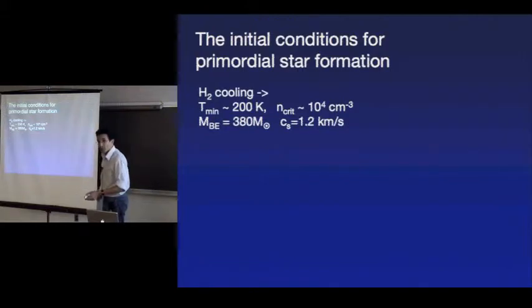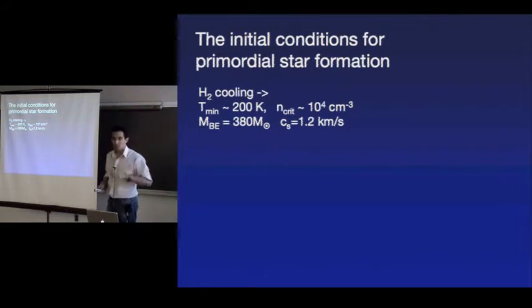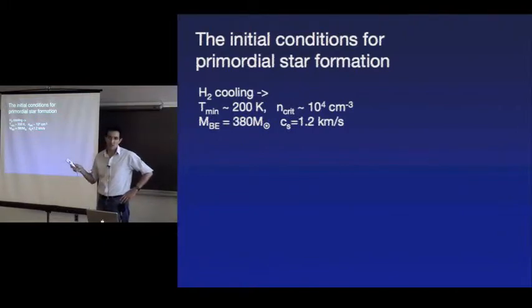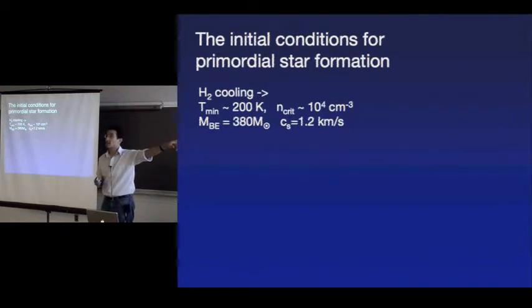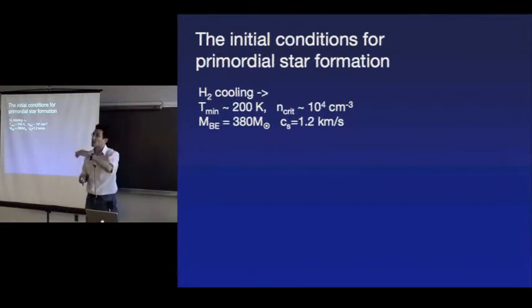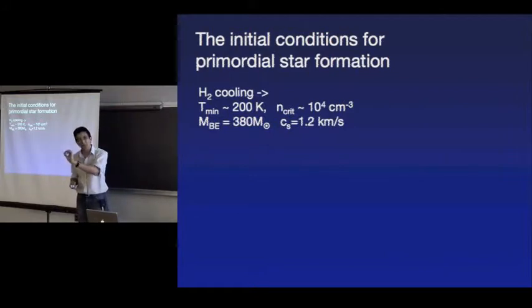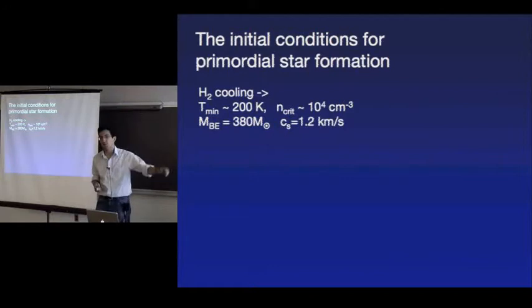So this is Population 3.1, where formation has only been affected by cosmological initial conditions. There could be a low-mass star nearby that put out some FUV light that dissociated a few molecules, but only an insignificant fraction — that would still count as 3.1. You need far ultraviolet, between about 11 to 13 electron volts, to dissociate H2 — Lyman-Werner band photons.